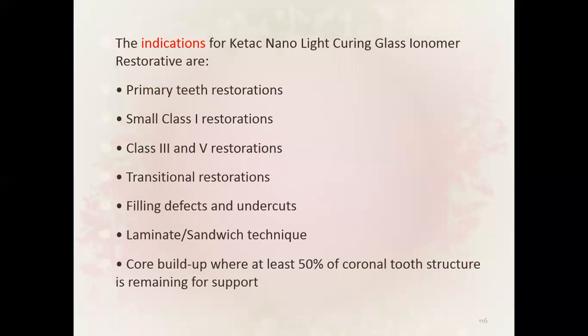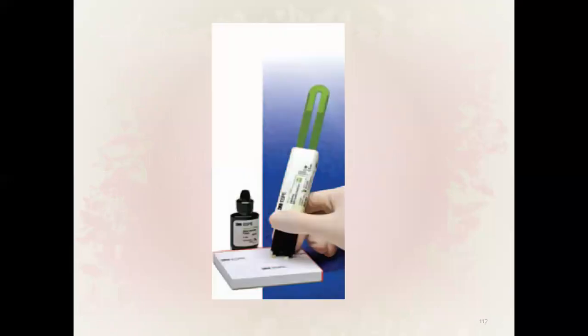Indications for Ketac Nano light curing glass ionomer restorative: primary teeth restorations, small class one restorations, class three and five restorations, transitional restorations, filling defects and undercuts, liner in sandwich technique, and core buildup where at least 50 percent of coronal structure is remaining for support.